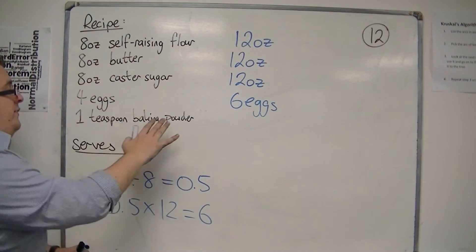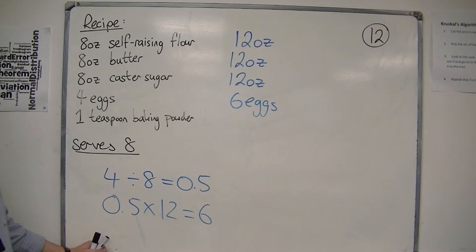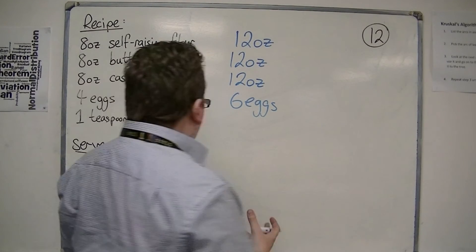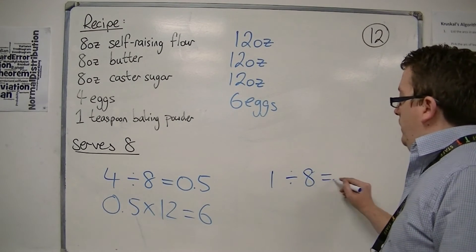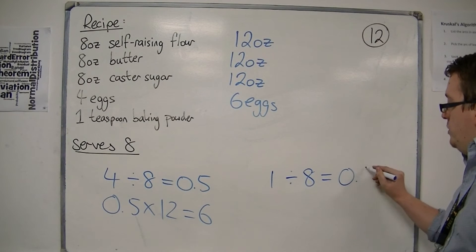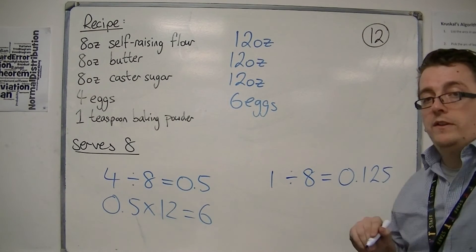1 teaspoon of baking powder is served between 8 people. So I need to do 1 divided by 8, which is 0.125 if you try that on the calculator.